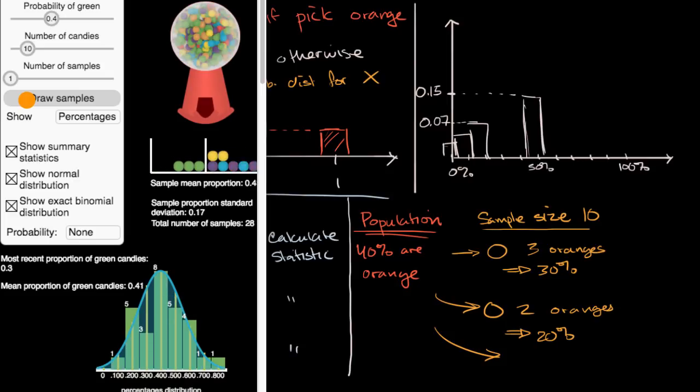And so what we're creating right over here is a sampling distribution. And if we were to do this an infinite number of times, we would get the true sampling distribution of the sample proportion, given the actual population proportion that is green.